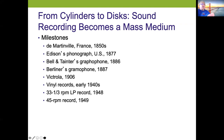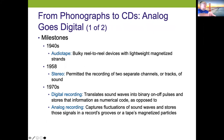Then vinyl records came in the early 1940s, and 33 and a third LP — long playing — albums from 1948. Then the 45 record, which was 1949. The milestones from phonographs to CDs: we went from analog to digital, which definitely improved sound.